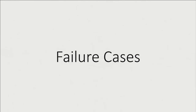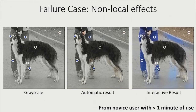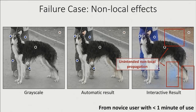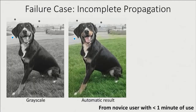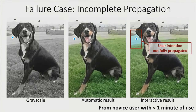Of course, algorithms make mistakes, and our system is no exception. Here we show a failure case from our user study: a novice user tried to make the jeans blue, but the blue color is propagated to the background as well — an undesired non-local effect where the algorithm propagates color too much. The opposite case is where the algorithm propagates too little: a user placed a point on the road, but the blue color only propagates to one side. It's still an open problem to determine how much color should propagate.